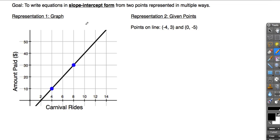Today we're going to discuss writing equations of lines in slope-intercept form when we're given two points, and we're going to look at three different representations. The first is when we have a graph. Here you can see I have a graph which shows how much you have to pay for a certain number of carnival rides.